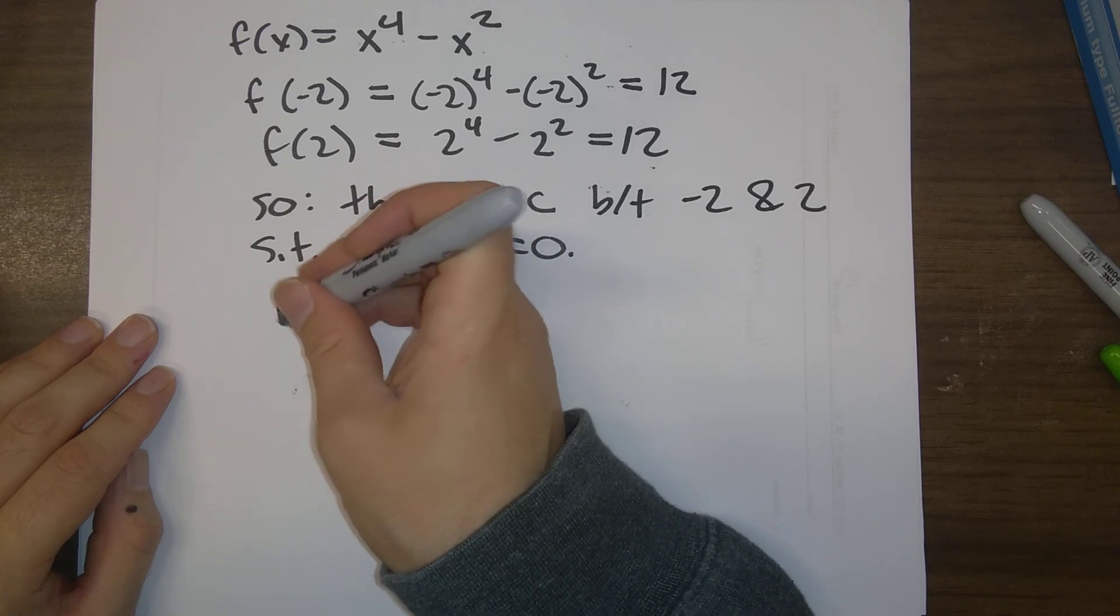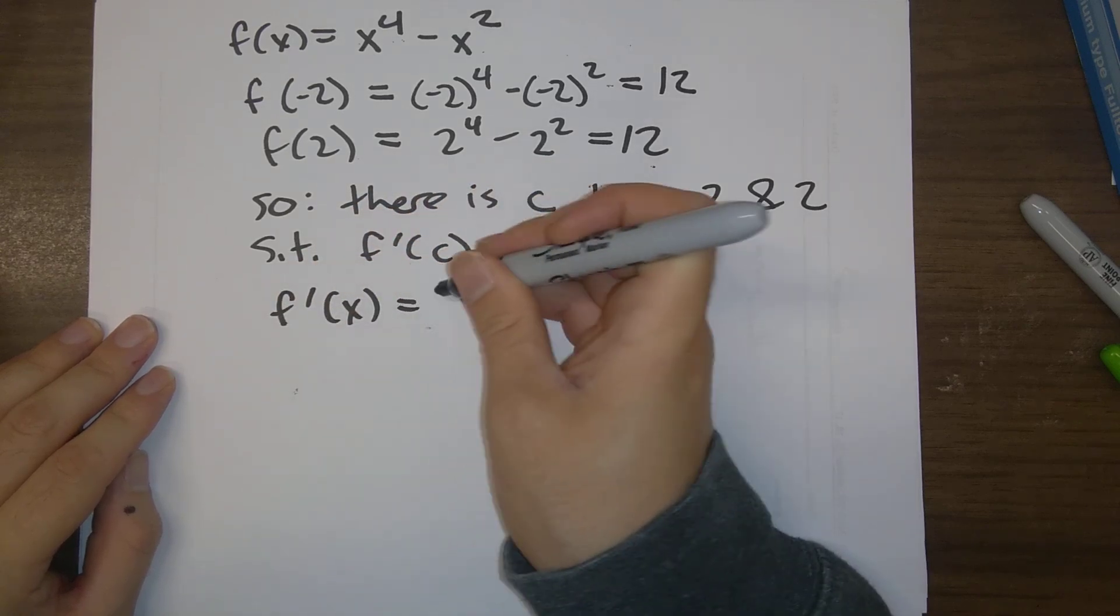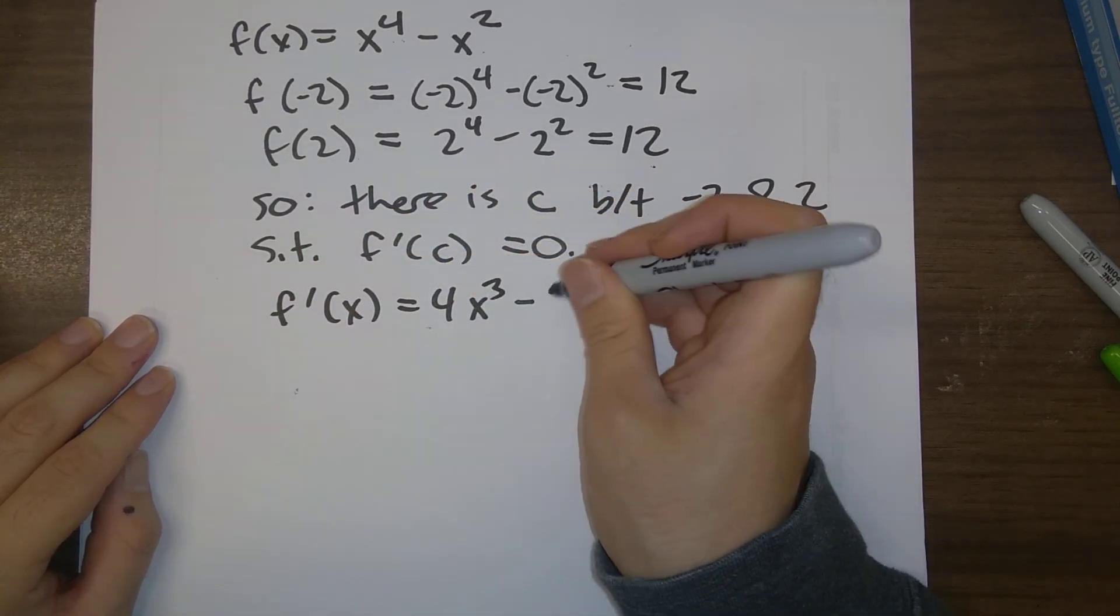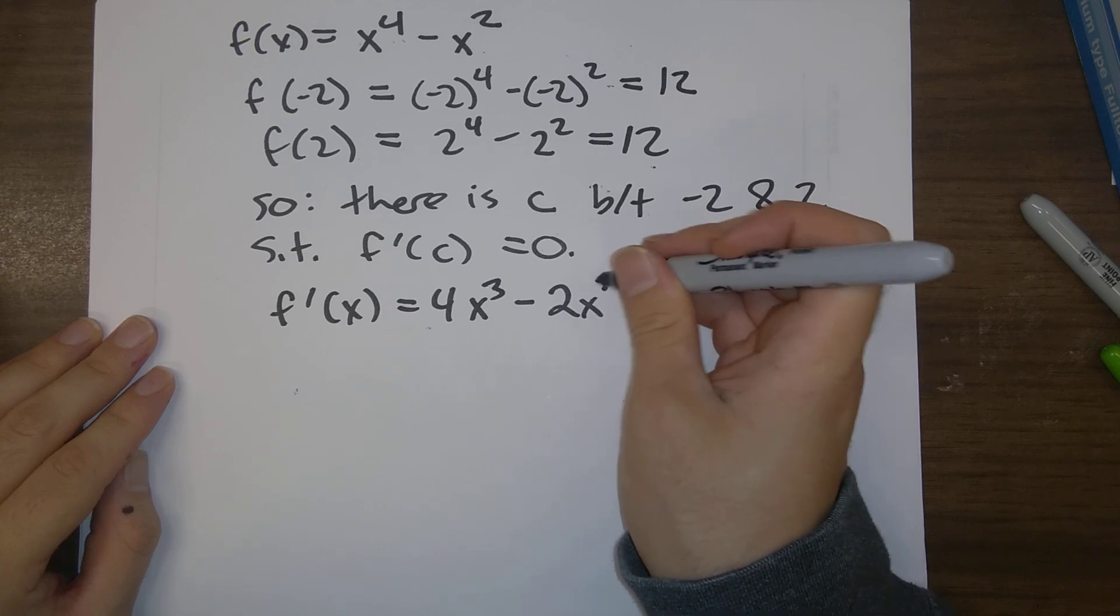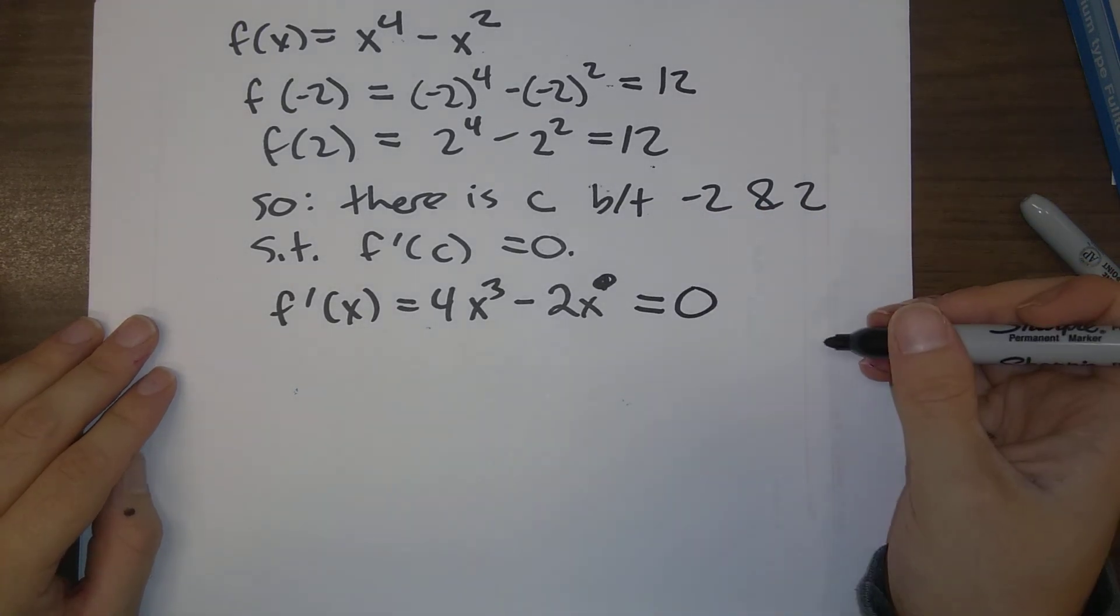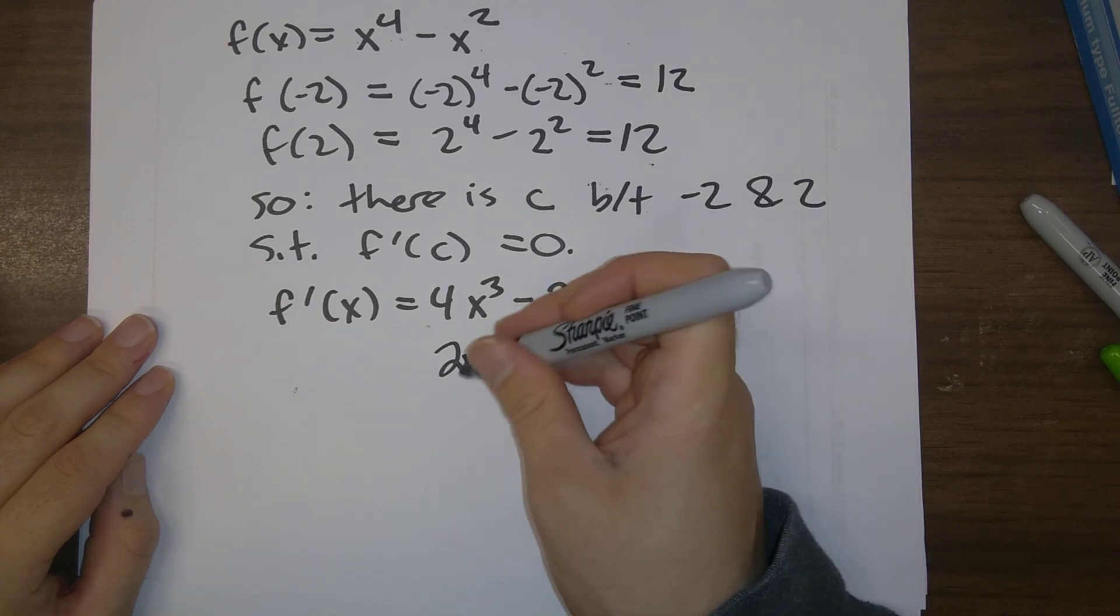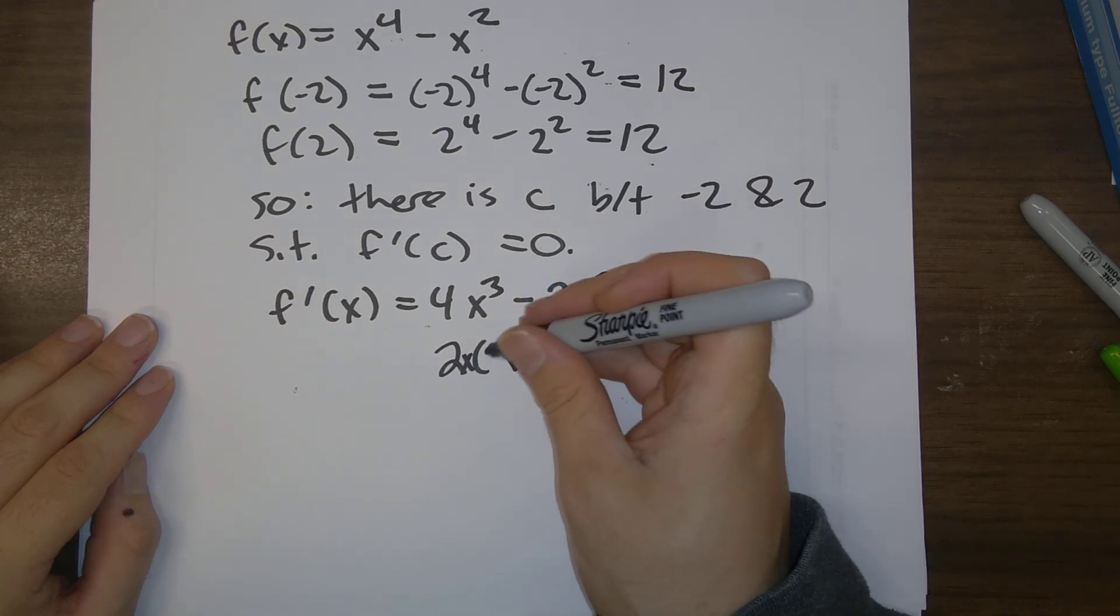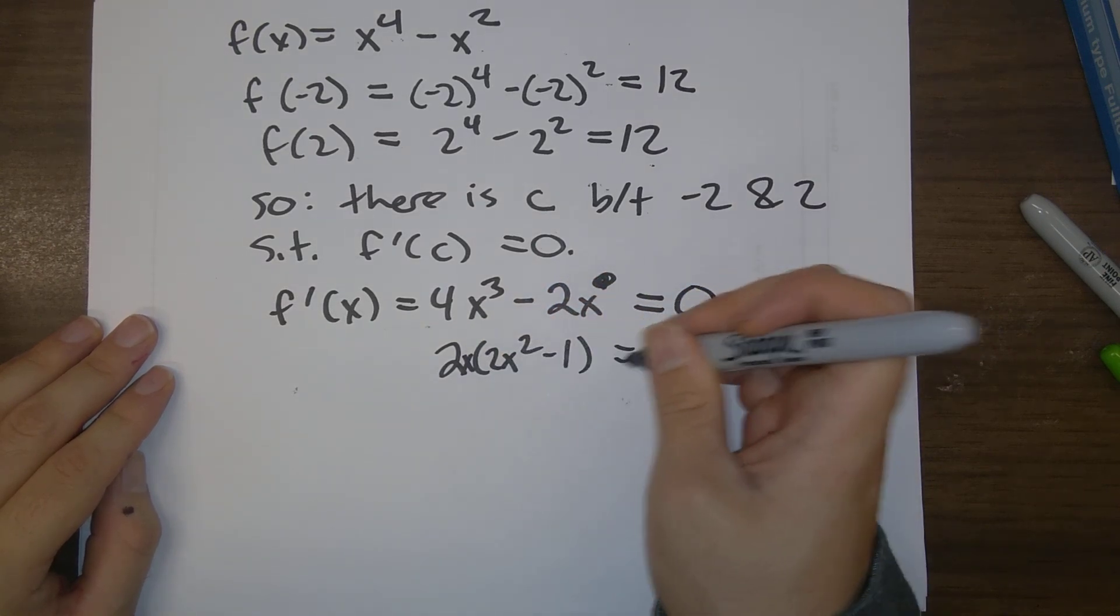So, if we crunch this out, f prime of x is 4x cubed minus 2x, so that equal to zero.